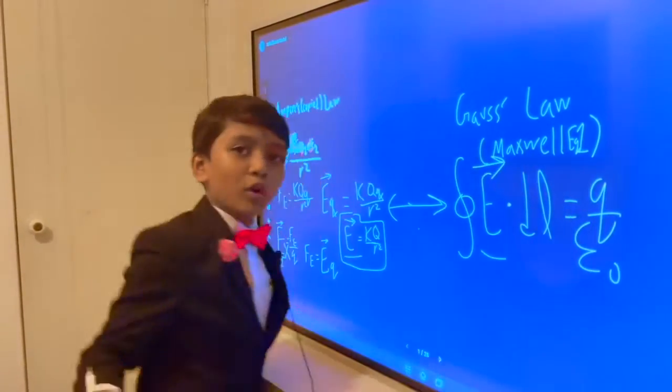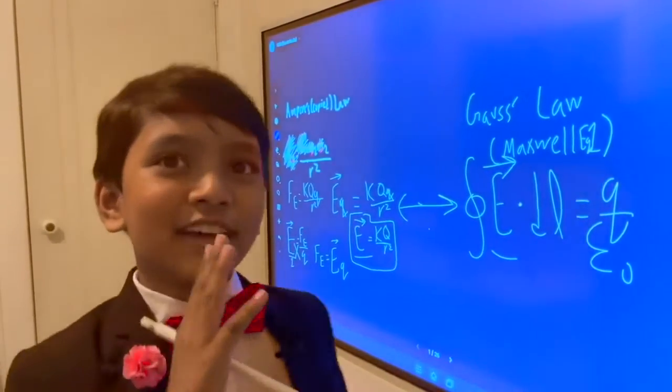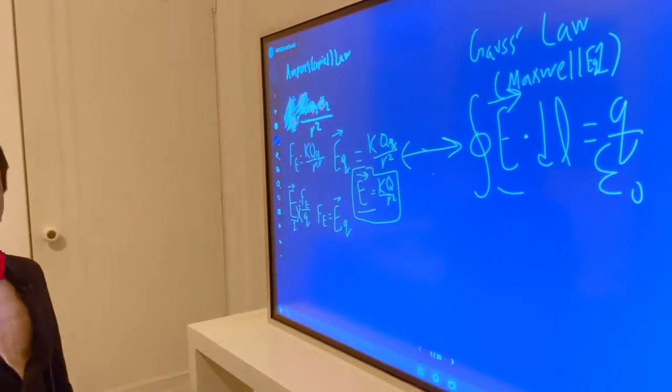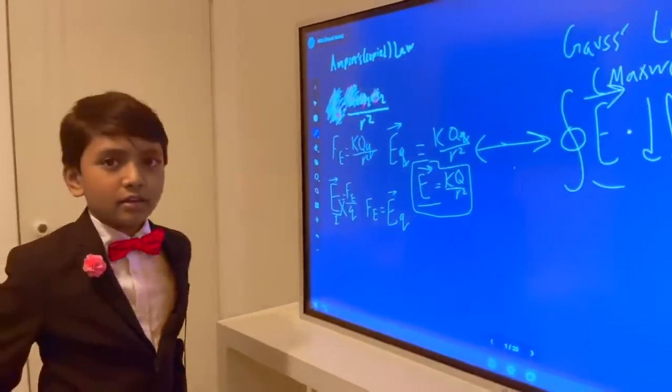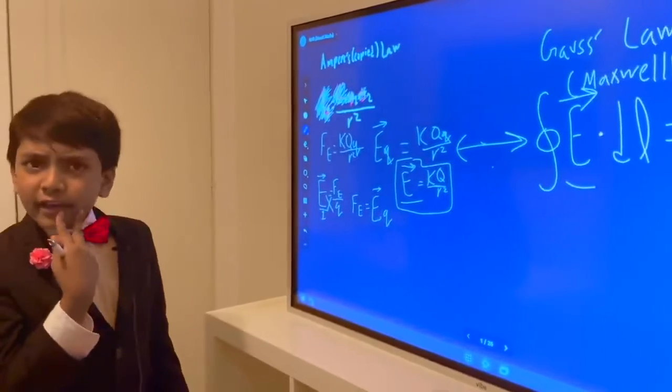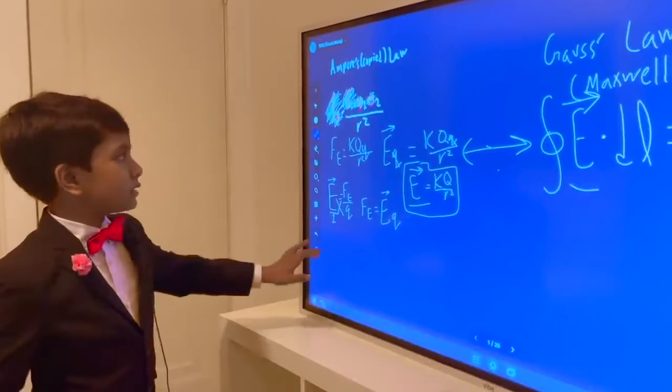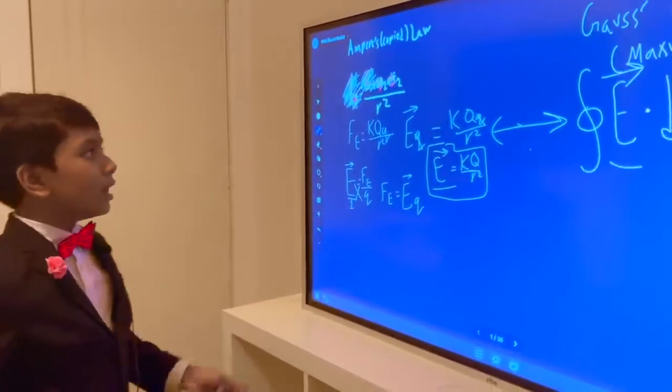And remember, E, it's a variable. Just adding the arrow is confusing. Alright. And then, finally. Now, is there a way to describe magnetism like Gauss law? Well, there's a way to describe magnetism like Ampere.